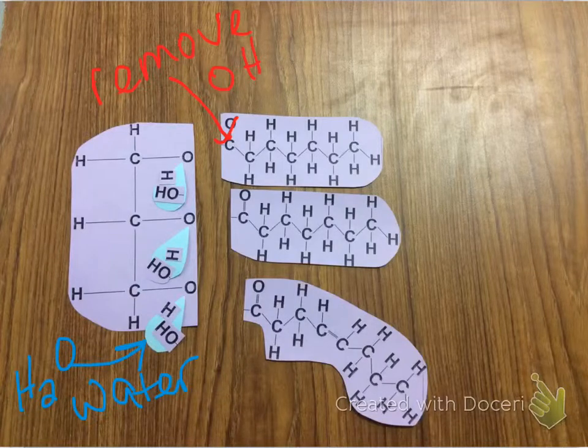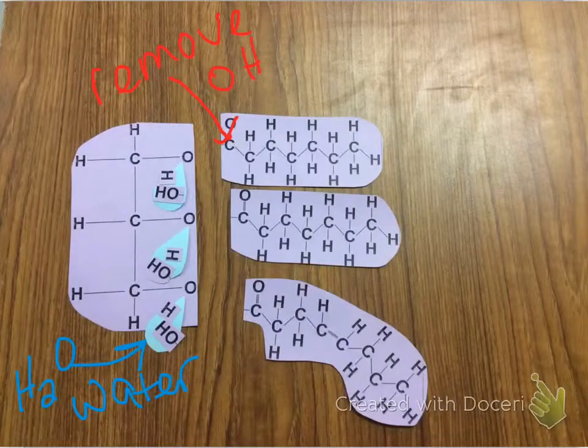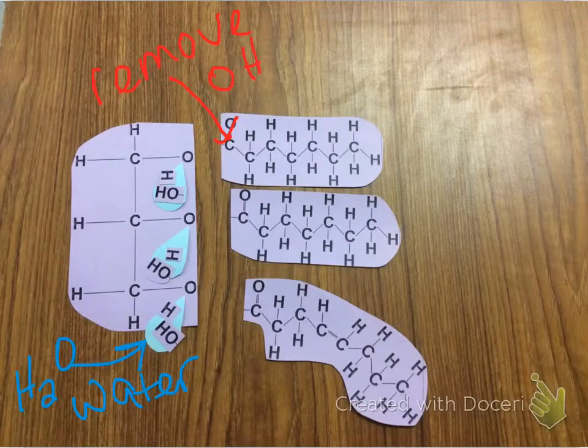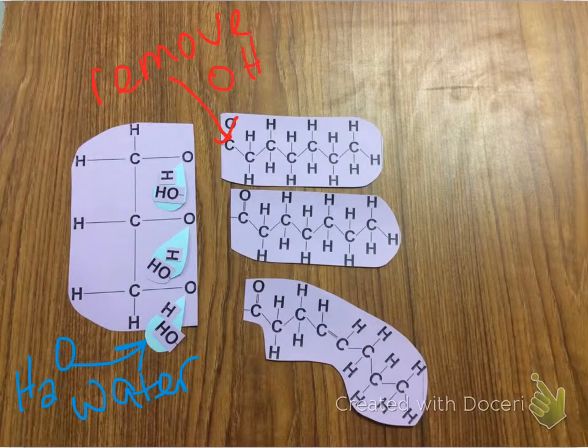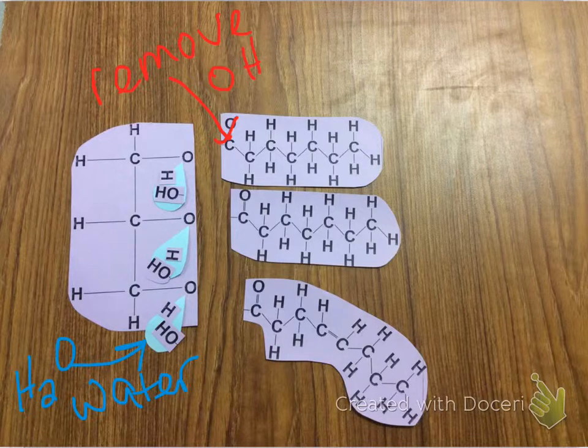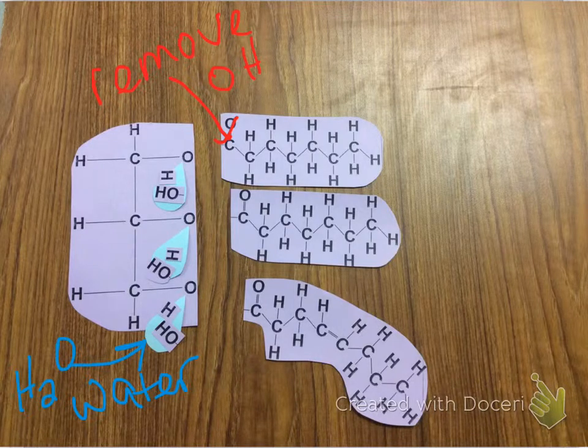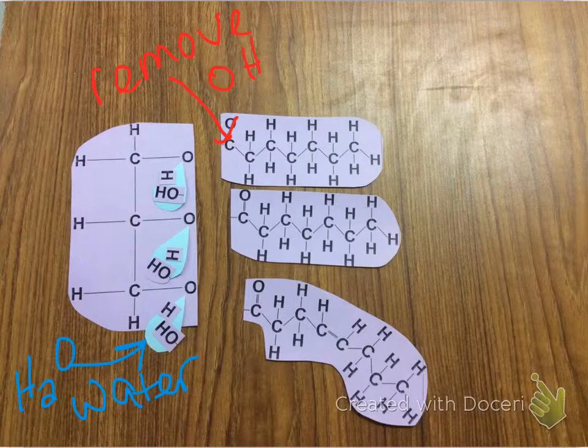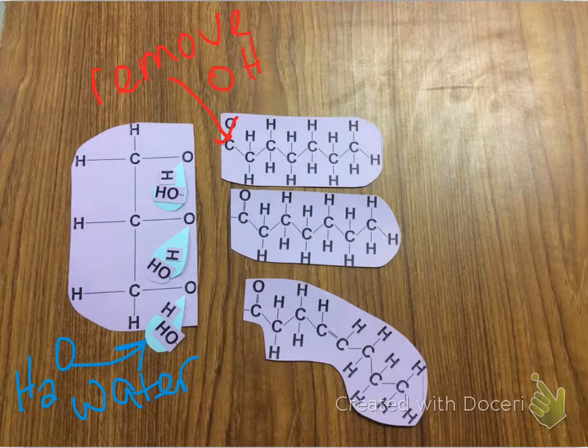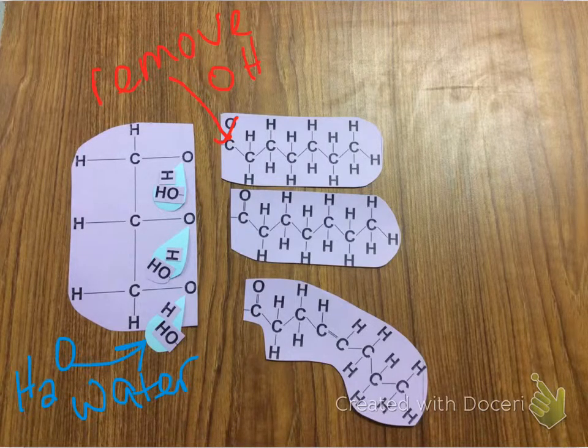Then the OH from the fatty acid chains is going to be removed, and that will give us H2O, which is a molecule of water. So with three fatty acid chains, we are removing three molecules of water, and you can see here each oxygen on the cut end and each carbon on the cut end has room for one more bond.